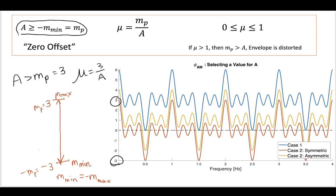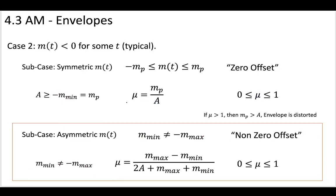For example, if A is four, our modulation index is three-fourths, which is between zero and one. We would shift the message up by four, so the lowest point — originally minus three — moves up one, two, three, four, becoming plus one. The entire message is shifted upward so it stays above zero at all times. That's the zero-offset case.